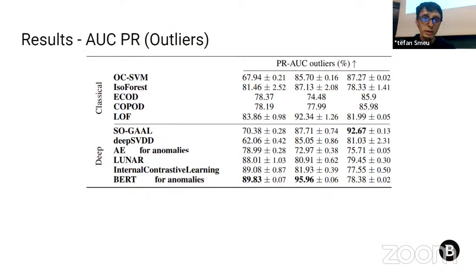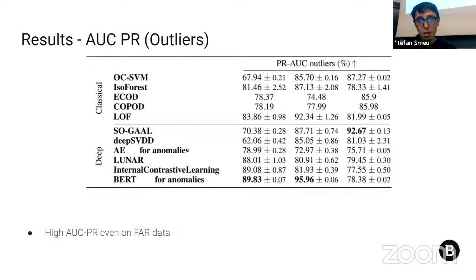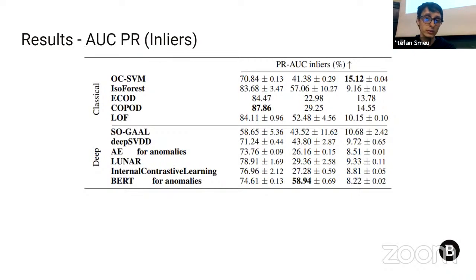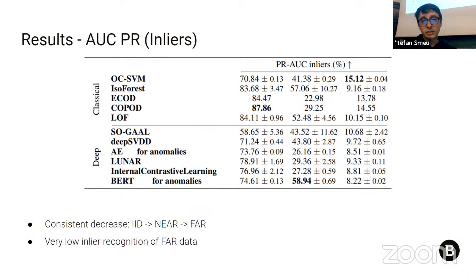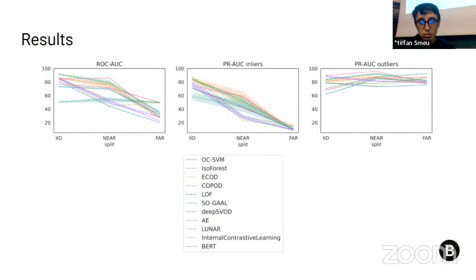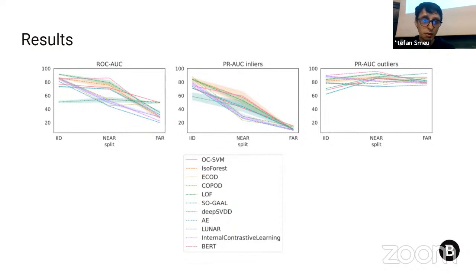Looking at precision-recall AUC for outliers, most values are generally high even on the far data, ranging from 75% to 90%+. However, for the precision-recall AUC on inliers, there is a very consistent performance degradation over time: IID is higher than near, which is higher than far. This hints at very low recognition for temporally distant inliers. In plot format, we see an almost linear trend of performance decrease for the inlier class, while the outlier precision-recall AUC is somewhat more consistent in time, and the ROC AUC is a combination of the two.